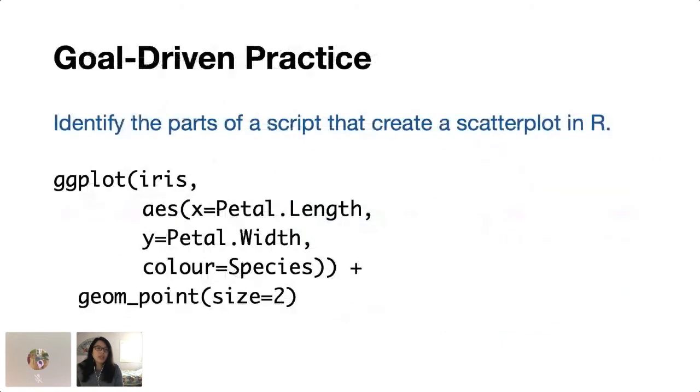So for example, if we're thinking back to our learning objective, identify the parts of a script that create a scatter plot in R. Instead of asking our learners to write out this whole chunk of code, I might only ask them to zoom in on specific pieces of the scripts that directly relates to the learning objective and modify these, change these and see what happens. So kind of making sure that it's a little bit more targeted given the time that we have and given the context that we're in.